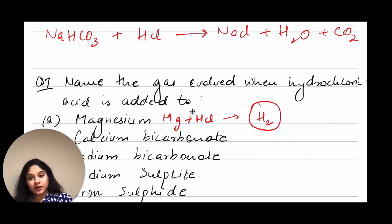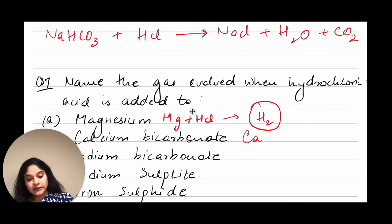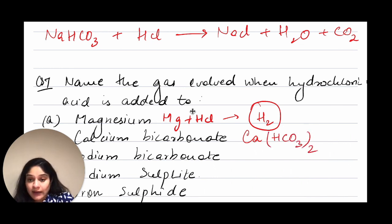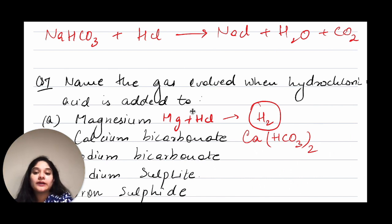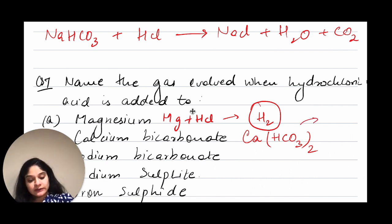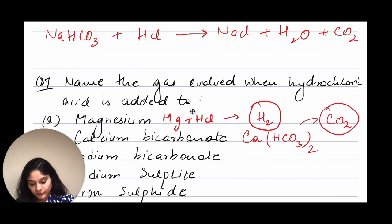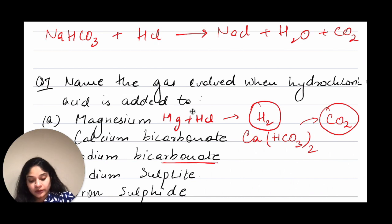Second is calcium bicarbonate — Ca(HCO₃)₂. Since it contains carbonate, CO₃, it will give us carbon dioxide gas. Third, sodium bicarbonate — again we have a carbonate, so this will also give carbon dioxide gas.